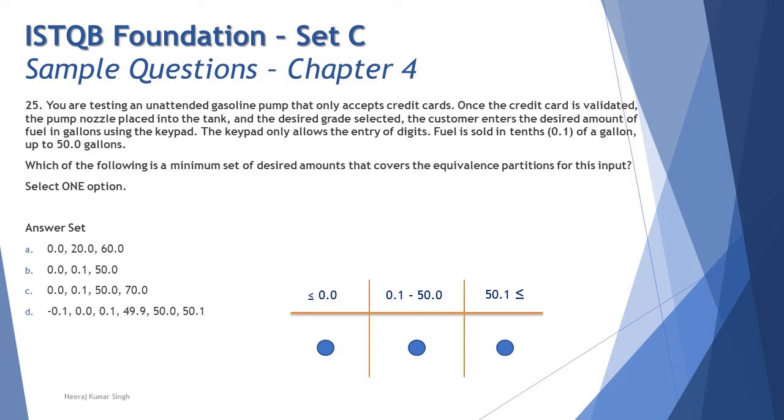Let's put all our options one after the other and see which covers all three ranges. Option A says 0.0, 20.0, and 60.0 - that absolutely covers all three ranges. Option B says 0.0 covers the first range, 0.1 covers the second, and 50.0 covers the second as well, so there's no value from the third range.